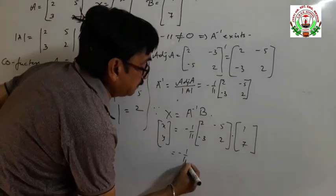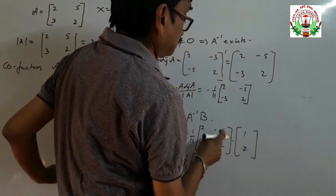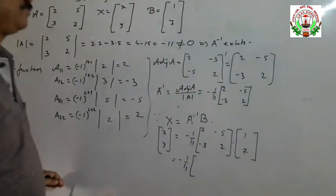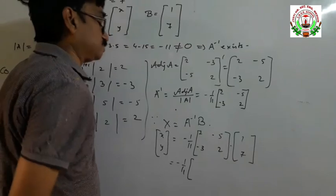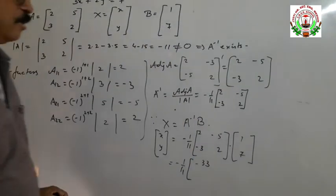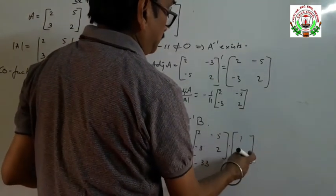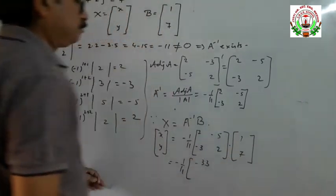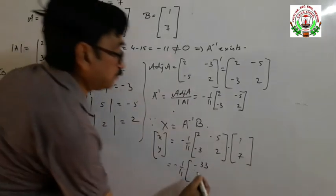So X equals minus 1 by 11 times the matrix [2, minus 5; minus 3, 2] into B which is [1; 7]. Computing: first row — 2 into 1 is 2, and minus 5 into 7 is minus 35, giving 2 minus 35 equals minus 33. Second row — minus 3 into 1 is minus 3, and 2 into 7 is 14, giving minus 3 plus 14 equals 11.